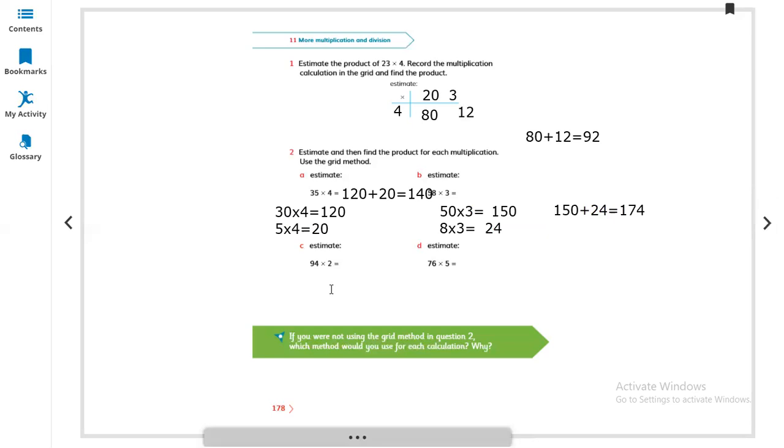Same like this, 94. This one we can do without using the same method. We are using another method: 94 multiply by 2. Just multiply: 4 multiplied by 2 is 8 and 9 multiplied by 2 is 18, so 188. This is our answer.